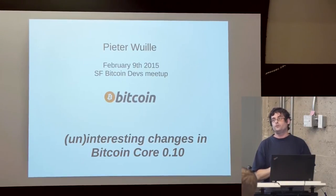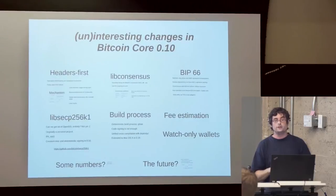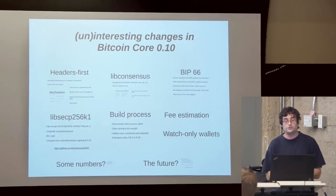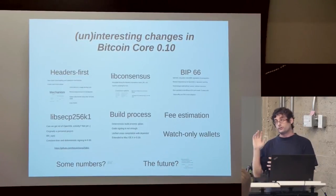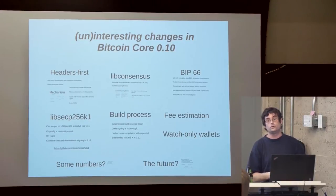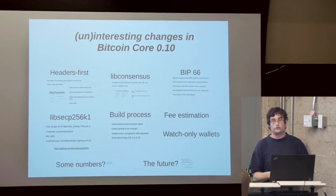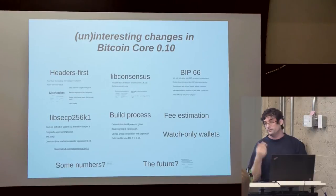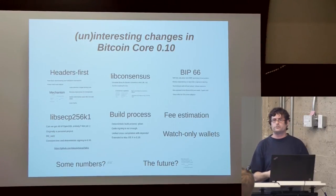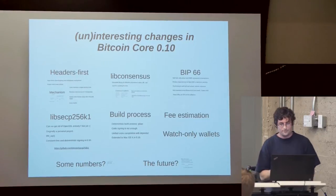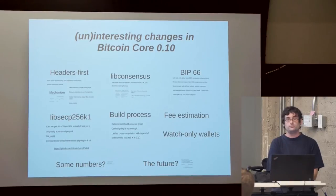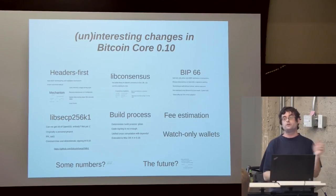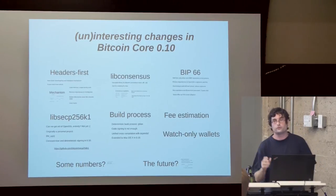The next change is libconsensus — a new library shipping with 0.10 releases. It's a reusable library for Bitcoin's consensus rules, callable from other software. It has a trivial C API, so it should be callable from many other languages if necessary. For now it's just scripting — it allows you to evaluate a particular Bitcoin script: given an input and an output script that tries to spend it, tell me whether it's valid or not.